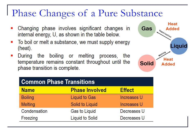Phase changes involve significant changes in internal energy. From solid to liquid — called the melting process — we need to add heat. From liquid to gas, we also need to add heat so that the liquid evaporates; we call this the vaporization or boiling process.